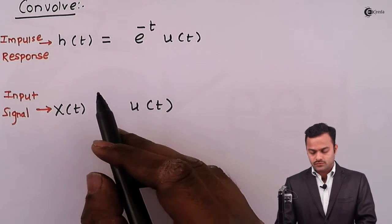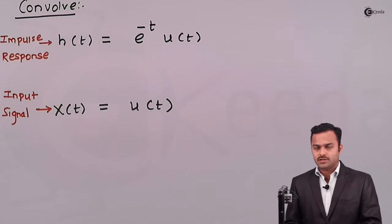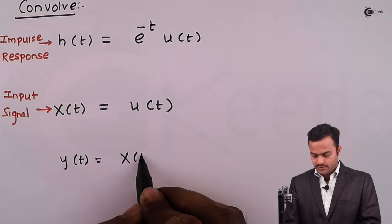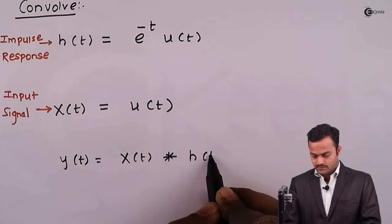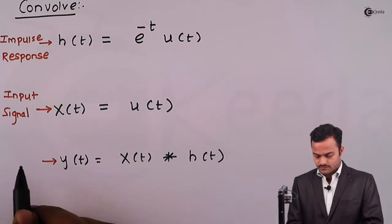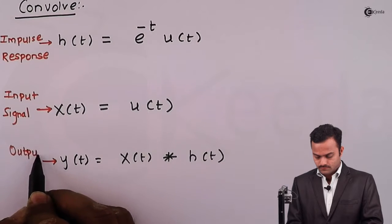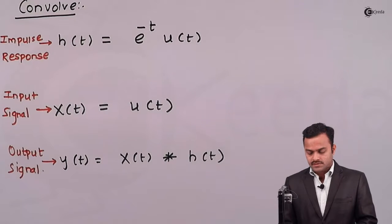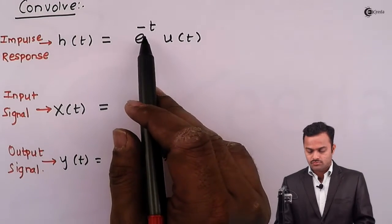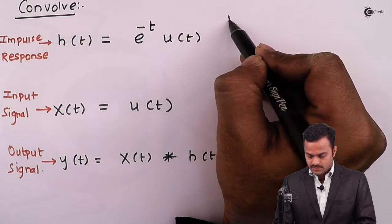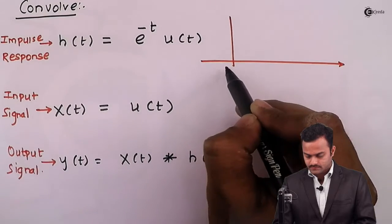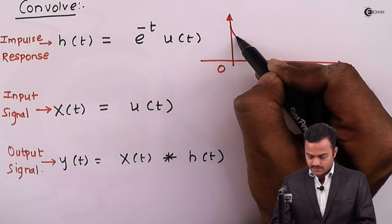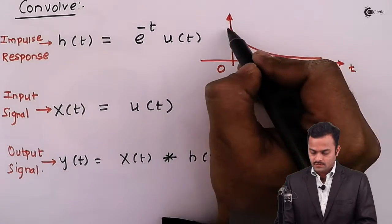With the help of these two signals we need to get the output using the convolution formula, so we need to find y(t) = x(t) convolved with h(t), which is our output signal. First we will plot the signals. For h(t) = e^(-t)·u(t), because of the u(t) factor this signal exists from 0 to infinity along the t-axis.